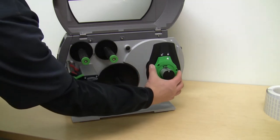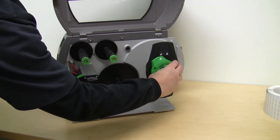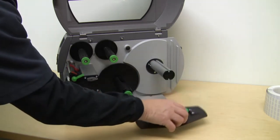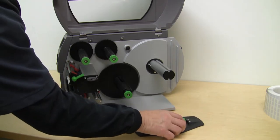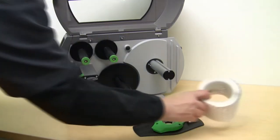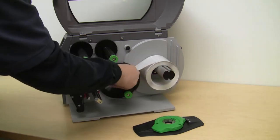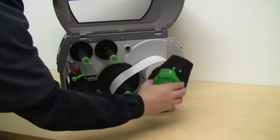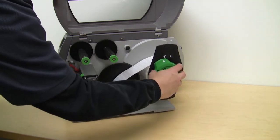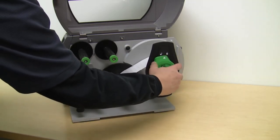To load labels we start by unlocking the supply label guide. The labels are then simply placed on the label supply spindle. The supply label guide is replaced and locked into place, making sure that it's not too tight up against the labels.